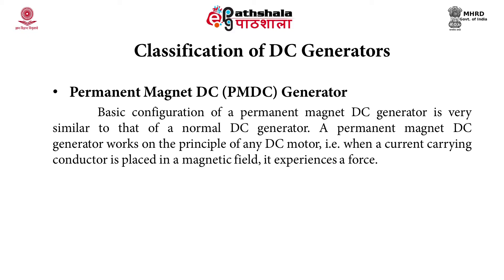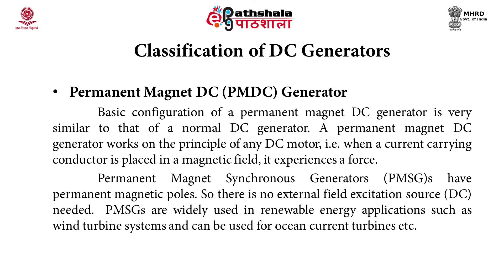The basic configuration of a permanent magnet DC generator is similar to that of a normal DC generator. It works on the principle that when a current-carrying conductor is placed in a magnetic field, it experiences a force. Permanent magnet synchronous generators (PMSGs) have permanent magnetic poles, so no external field excitation source is needed. PMSGs are widely used in renewable energy applications such as wind turbine systems and can be used for ocean current turbines.